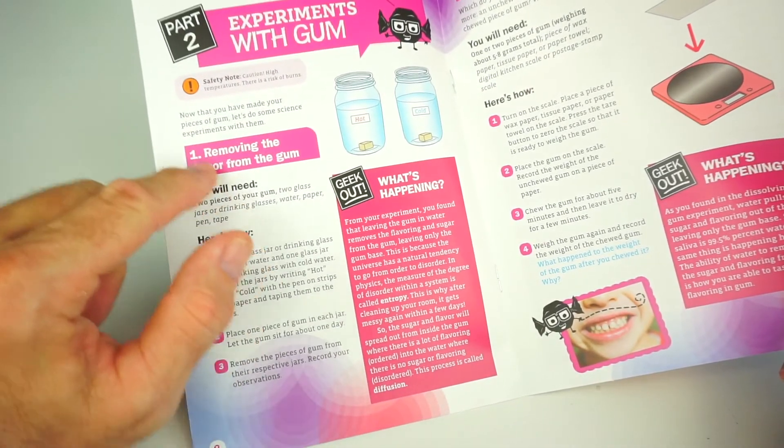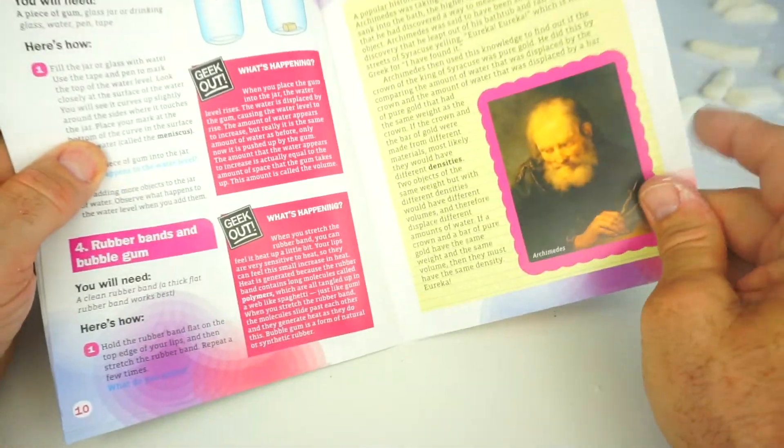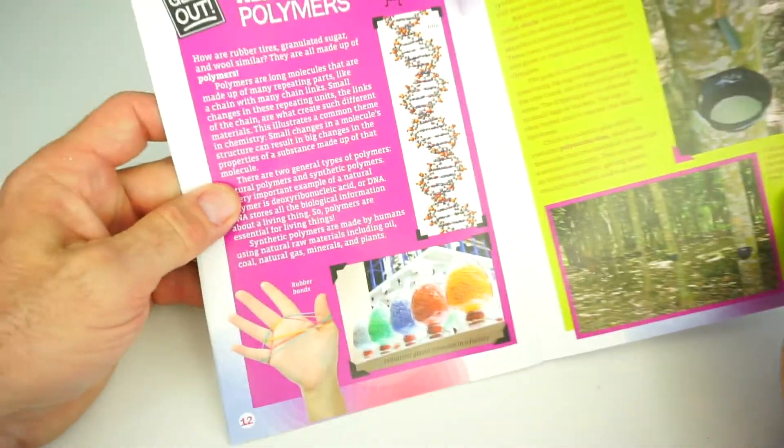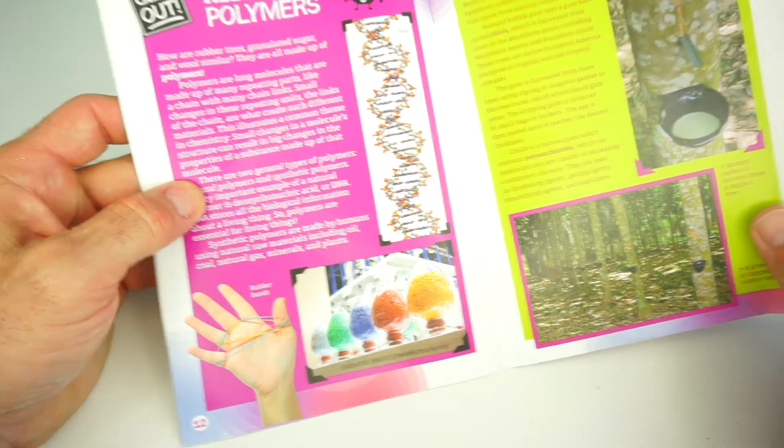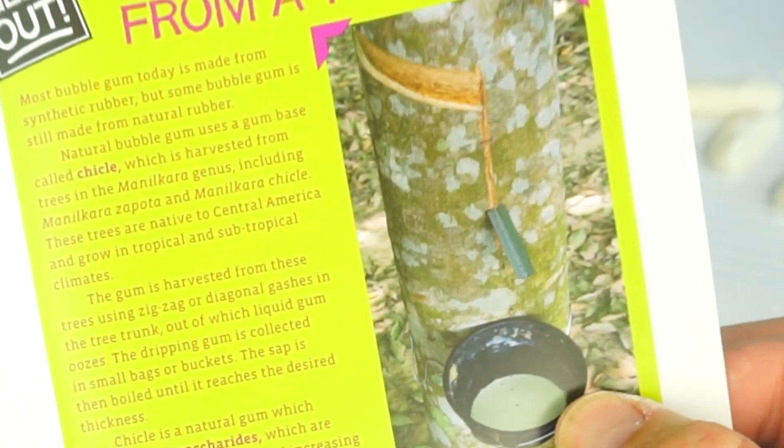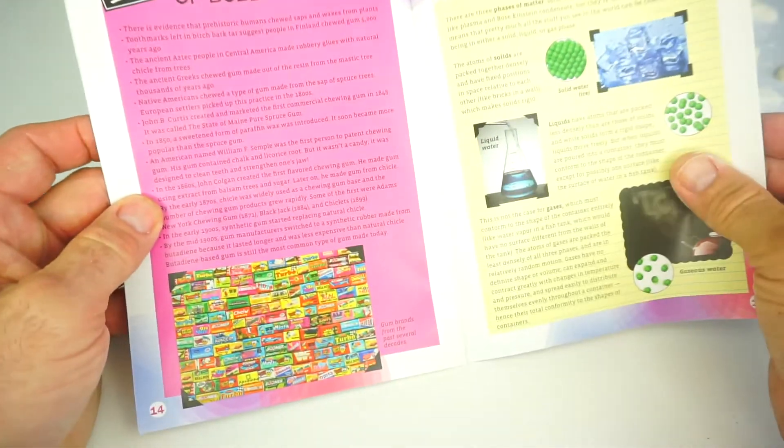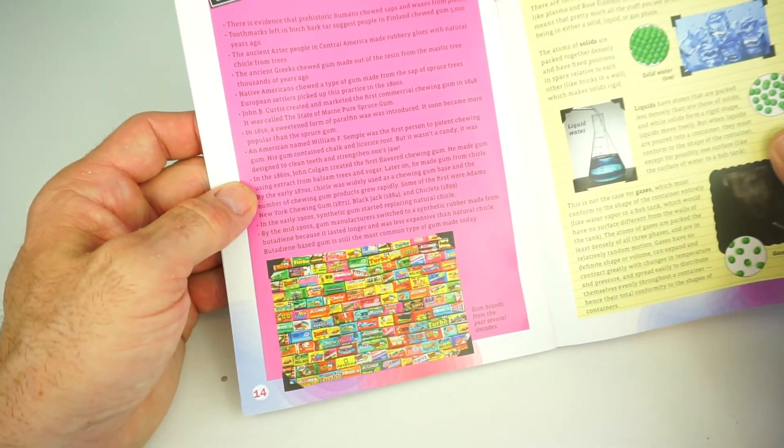Here's one experiment right there. And then if you go over to the next page, we have a page all about polymers. You can read that. And the natural gum from a tree, like I mentioned earlier, gum does come from a tree. It's a rubber base. And then they turn it into gum. And here is a brief history of bubble gum.